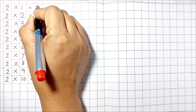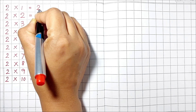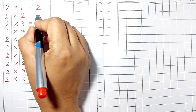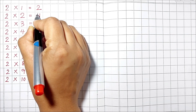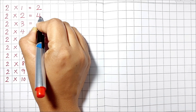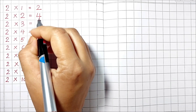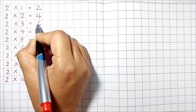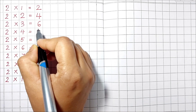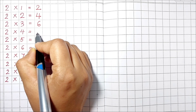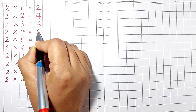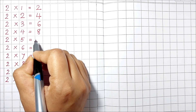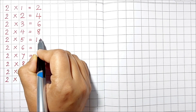2 1's are 2. 2 2's are 4. 2 3's are 6. 2 4's are 8. 2 5's are 10.